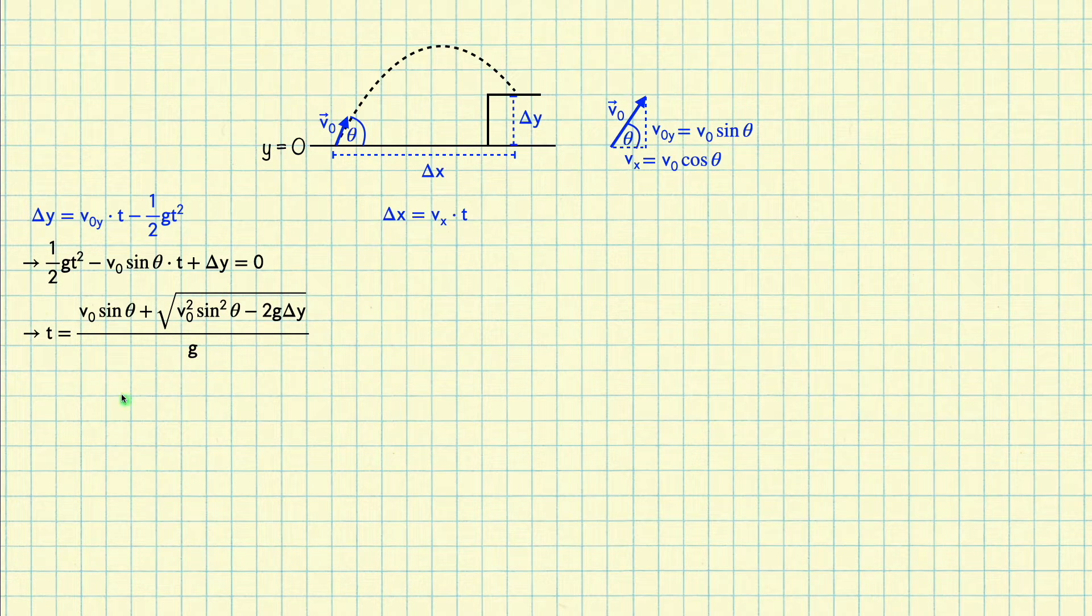Now normally, the quadratic equation has two solutions, a plus solution and a minus solution. Both the plus and minus solutions correspond to a time where the ball reaches height delta y. But since we're trying to maximize the range, we want the later time, when it's on the way down. So this would be the plus solution. Also notice that if y is negative, the minus solution will also be negative. This would correspond to a time before we threw the ball, so that doesn't really make sense, so either way we want the plus solution.